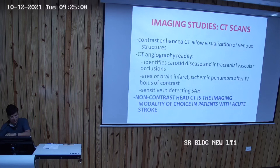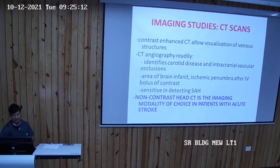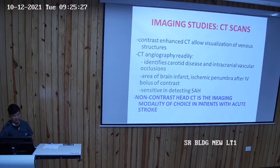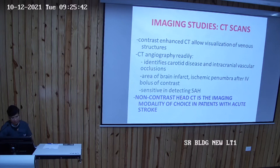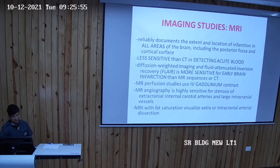Contrast-enhanced CT allows visualization of venous structures, and CT angiography identifies carotid disease, intracranial vascular occlusion, area of brain infarct, ischemic penumbra after IV bolus of contrast, and is sensitive for detecting subarachnoid hemorrhage. However, non-contrast CT is the imaging modality of choice in patients with acute stroke because it is easily available, easy to perform, and has no specific contraindications.